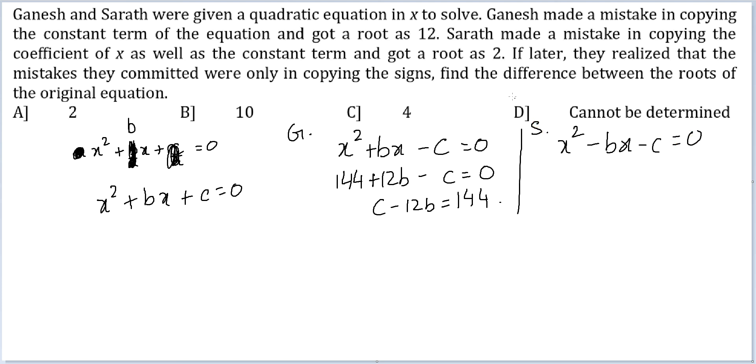This is Sharath. And he got a root is 2. So 4 minus 2b minus c is equal to 0, or c plus 2b is equal to 4.